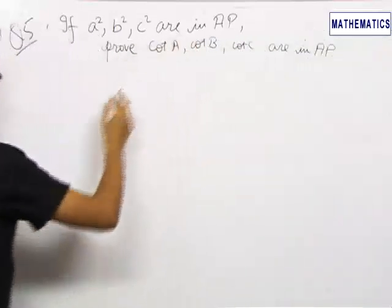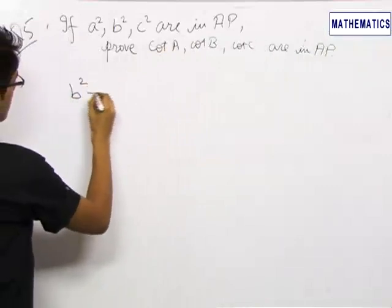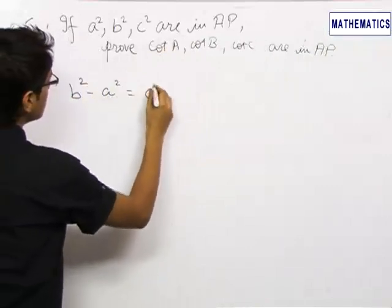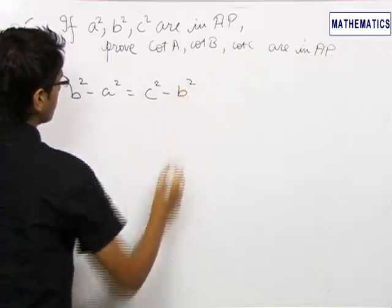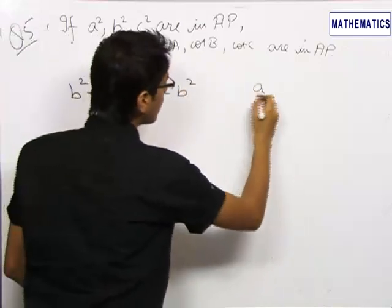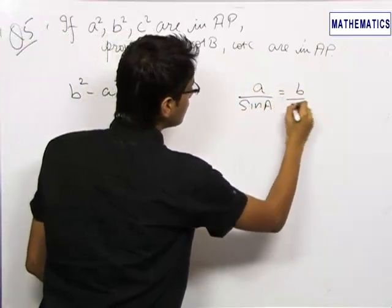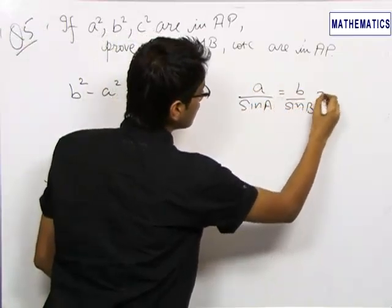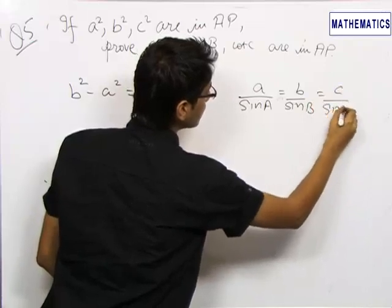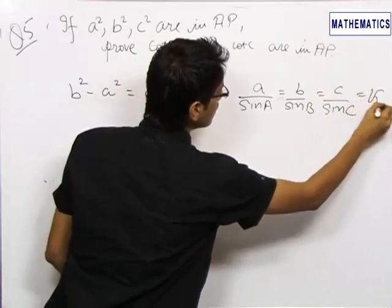Since A square, B square, C square are in AP, we write B square minus A square equals C square minus B square. Now in a triangle, we know that A upon sin A equals B upon sin B equals C upon sin C equals a constant K.